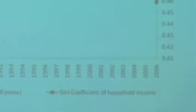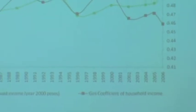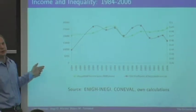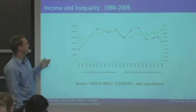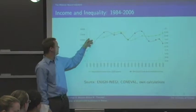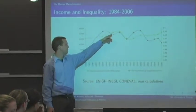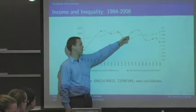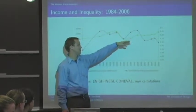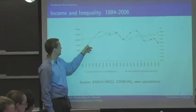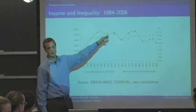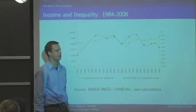Moving from national income accounts to household surveys, this is the National Survey of Income and Expenditures, used to calculate income growth. On the green line, income growth was going up, and then again in 1994-95 prices decreased. Income is just now sort of recovering. Inequality, shown on the red line, is moving up and down and decreasing slightly as we get to the present day.